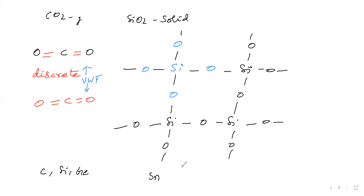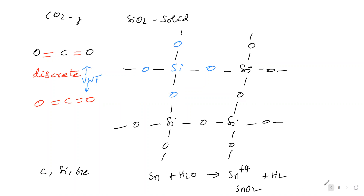Tin reacts with steam: tin undergoes oxidation to Sn⁴⁺, and hydrogen undergoes reduction to give hydrogen gas, while tin takes O²⁻ to become SnO2. So tin with steam gives SnO2 and hydrogen gas. Regarding lead, the surface atoms of lead combine with water to form lead oxide (PbO), which is insoluble. Since PbO is insoluble, water cannot penetrate into the bulk, so the bulk lead does not react further. Lead is not reacting with water due to formation of a protective oxide film on the surface.